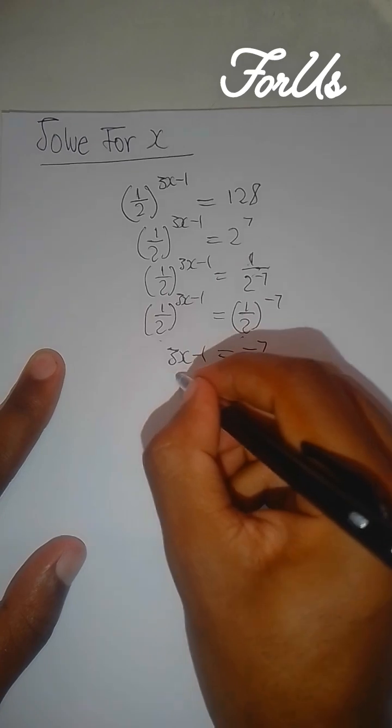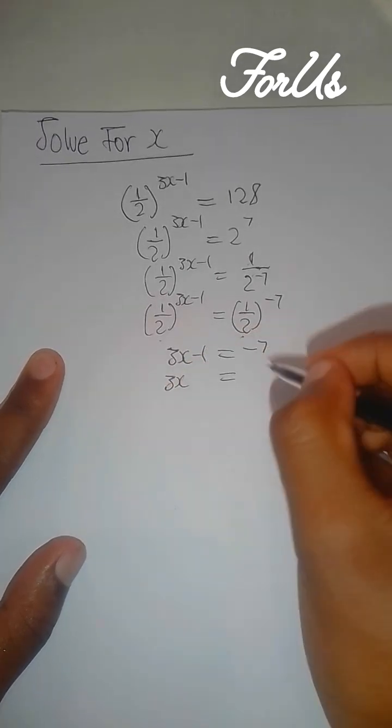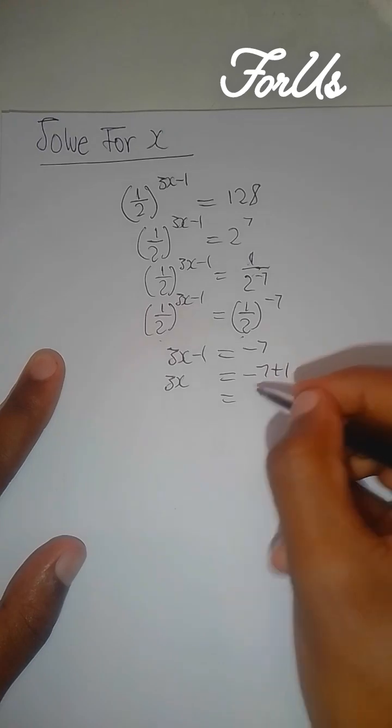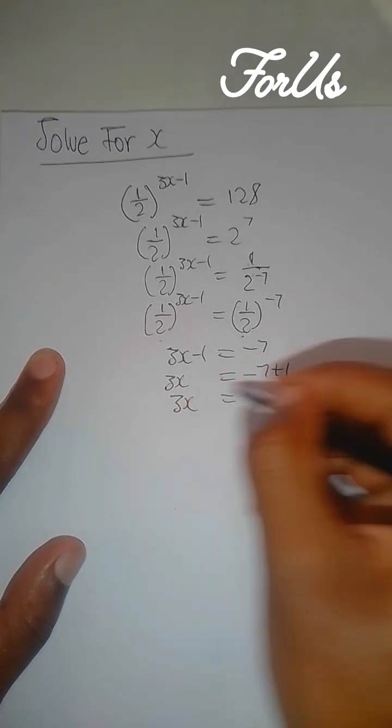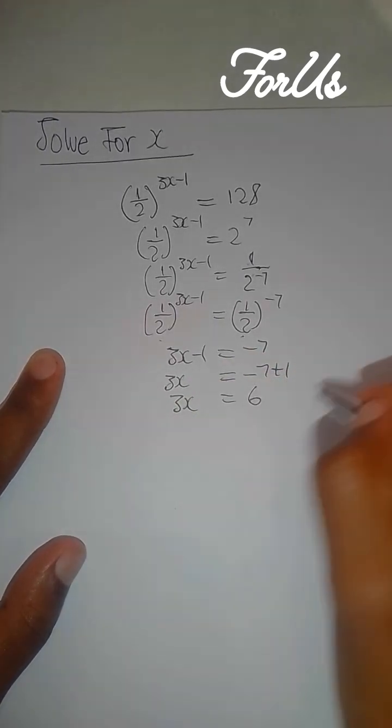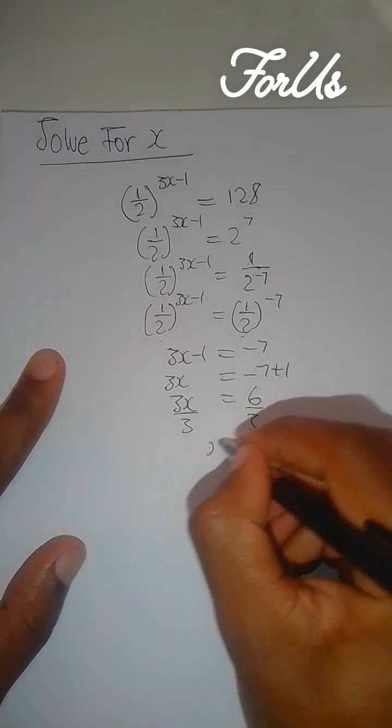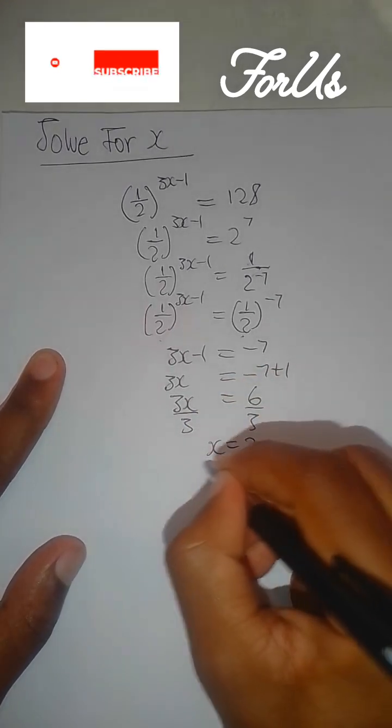So 3x equals negative 7 plus 1. 3x equals negative 6. Divide by 3, x equals negative 2. That's the answer.